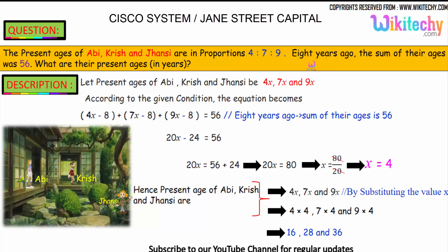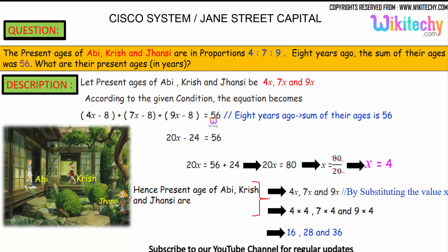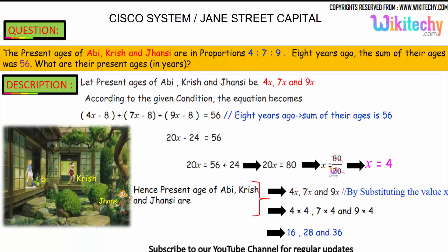According to the given condition, 8 years ago the sum of their ages was 56. So: (4x − 8) + (7x − 8) + (9x − 8) = 56. We get 20x − 24 = 56, so 20x = 80, and x = 80 ÷ 20 = 4. The value of x is 4.